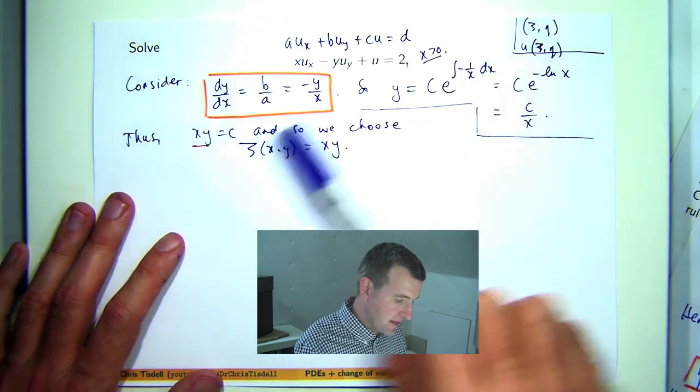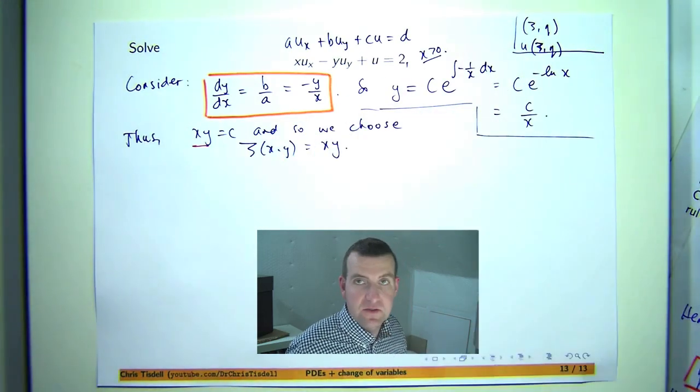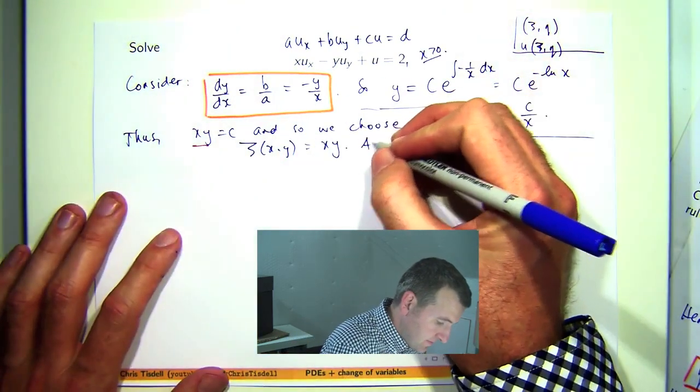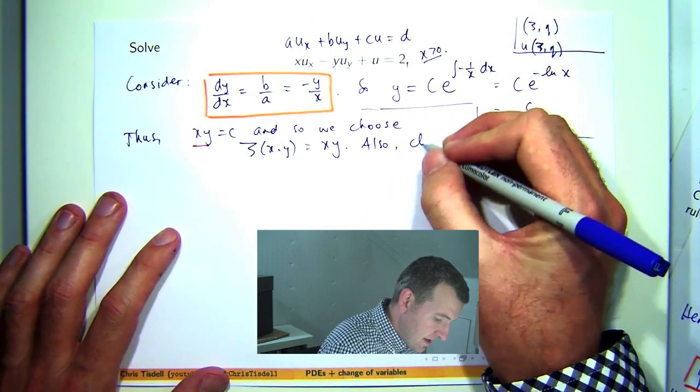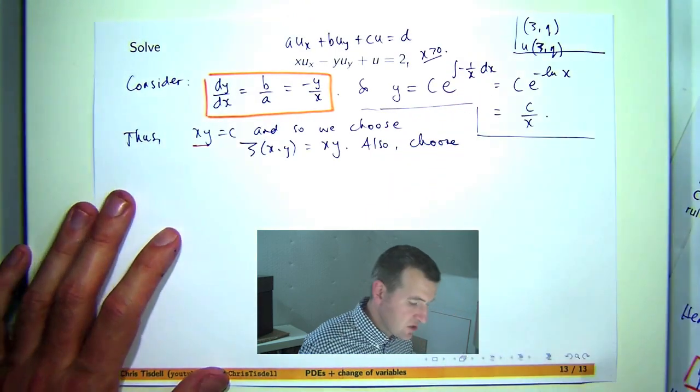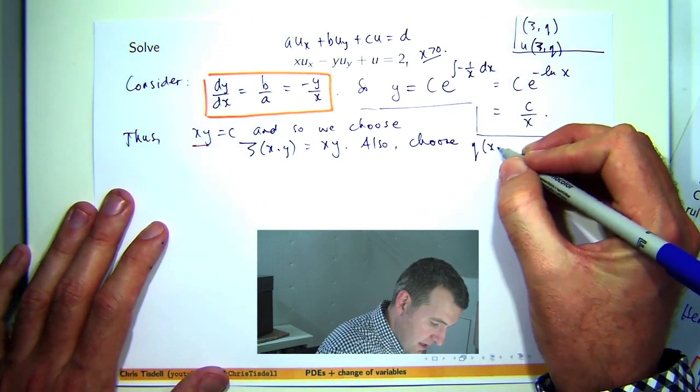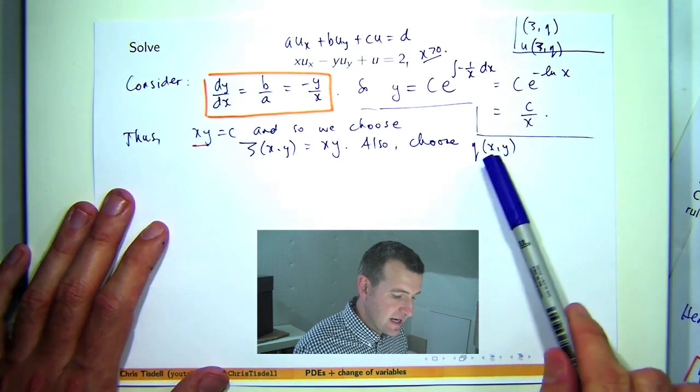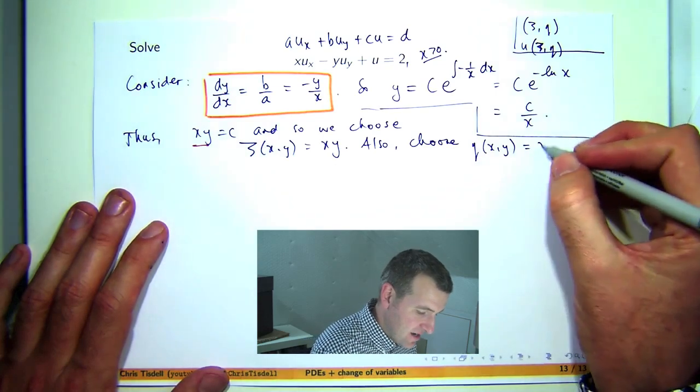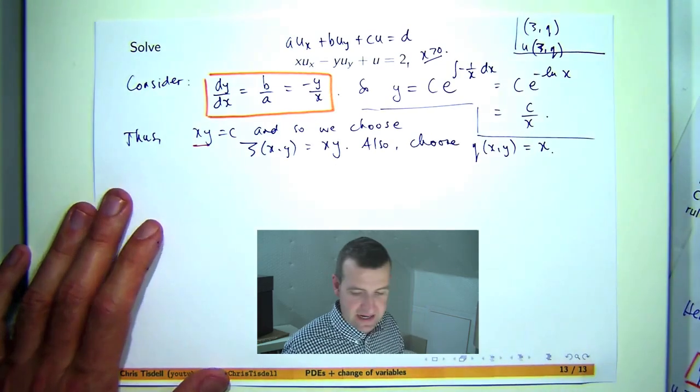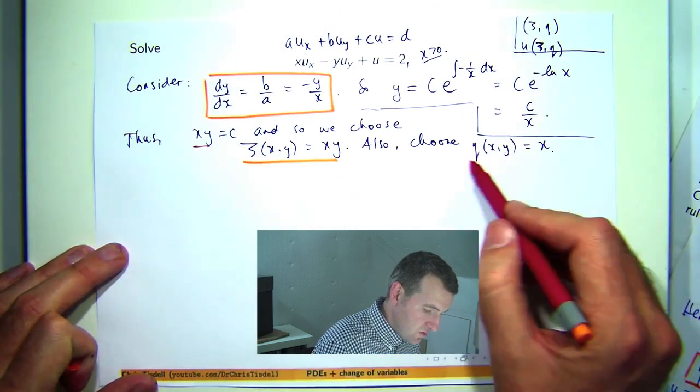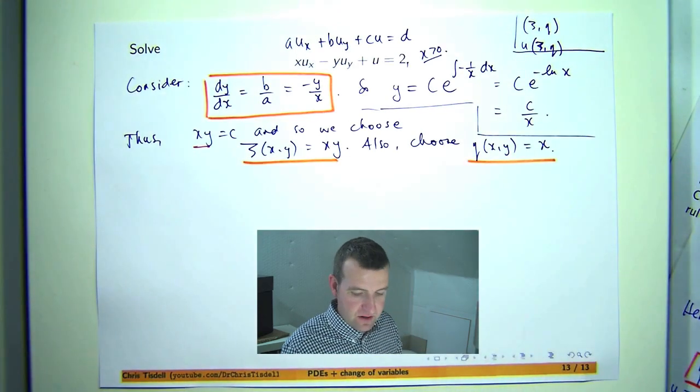Now you could choose eta to be that but I've just done it this way. Now once we've chosen that, the other choice is very simple indeed. Now even though I'm writing eta depends on x and y here, I'm just going to let it depend on x. So here are our two new sets of variables.